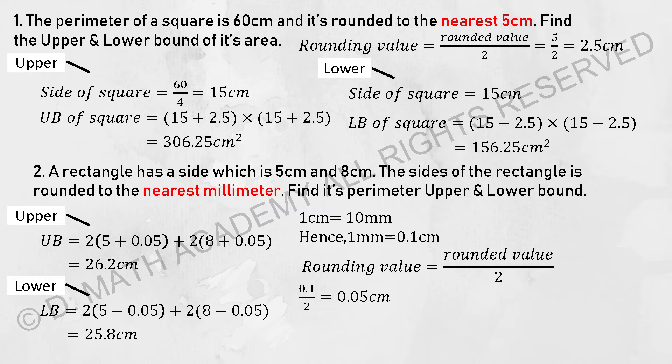For you to find the upper bound of this rectangle, you should take 5 plus 0.05 and take the 8 plus 0.05. I multiply each of the value by 2 because on the rectangle, each have 2 sides. So my final answer will actually be 26.2.